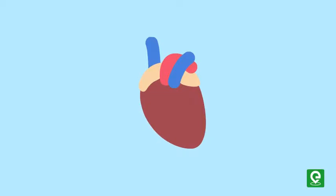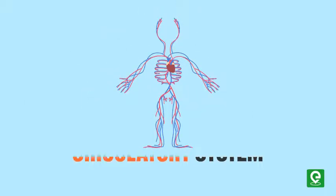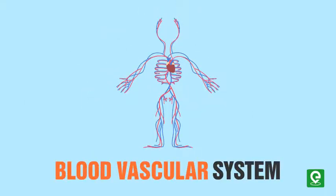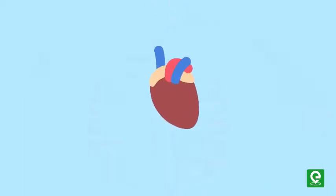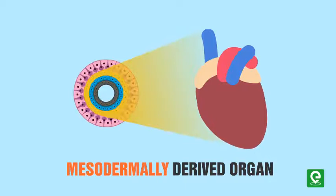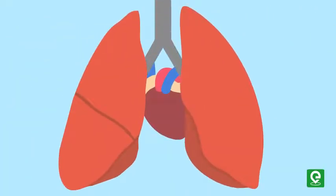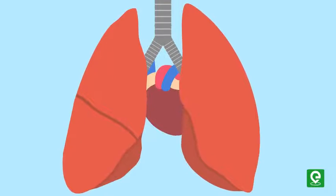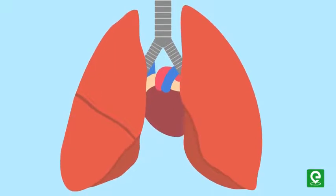The heart forms a circulatory system, or blood vascular system, along with a network of closed branching blood vessels and blood. The heart is a mesodermally derived organ situated in the thoracic cavity, in between the two lungs, slightly tilted to the left.